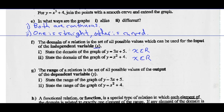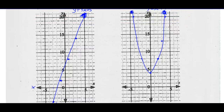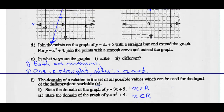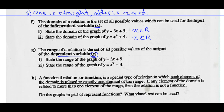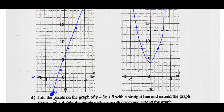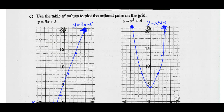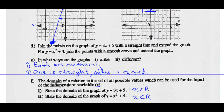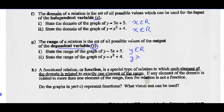The range is all the possible output values of the dependent variable, or the Y coordinates — Y is our vertical. For the line, the graph goes forever up and forever down, so Y can be any real number. For graph 2, the graph goes forever up but it does not go forever down. In fact, it never gets lower than the vertex point, which occurs when Y is 4. So every value in this graph is greater than or equal to 4, and there's nothing below Y equals 4. Therefore the range for this graph is Y is greater than or equal to 4.